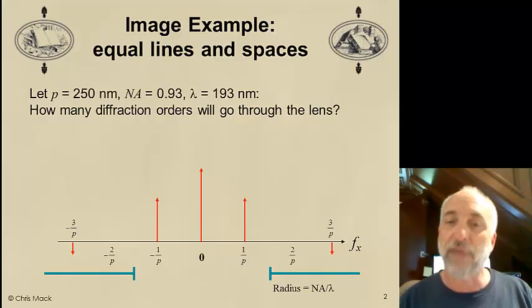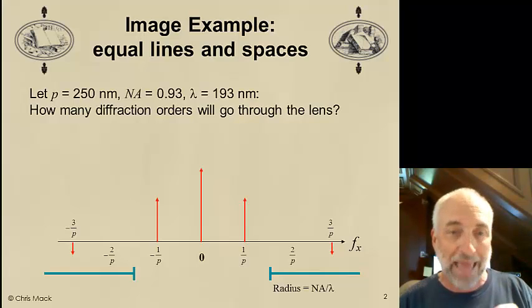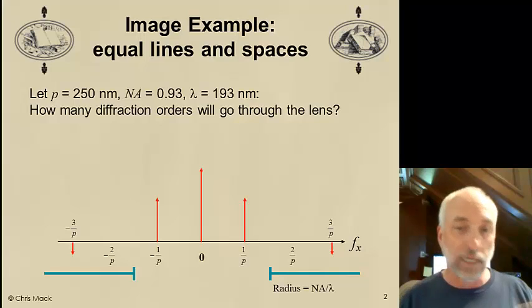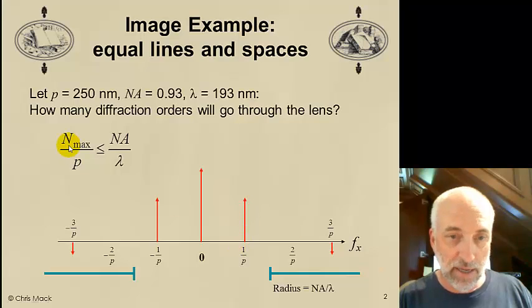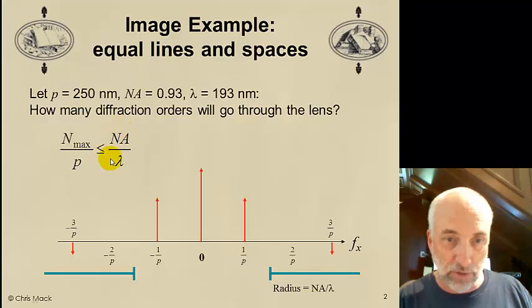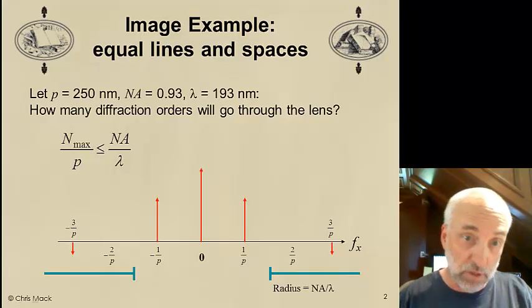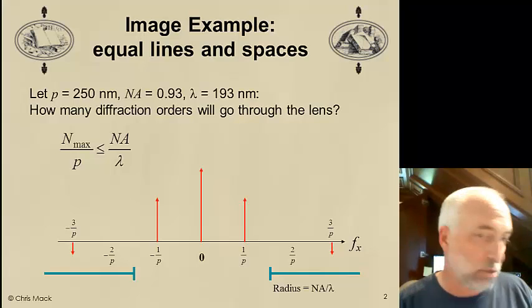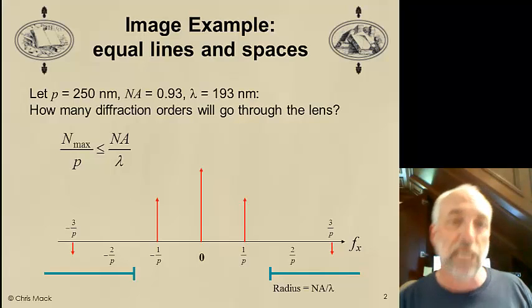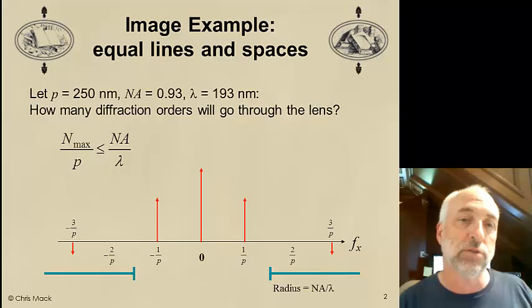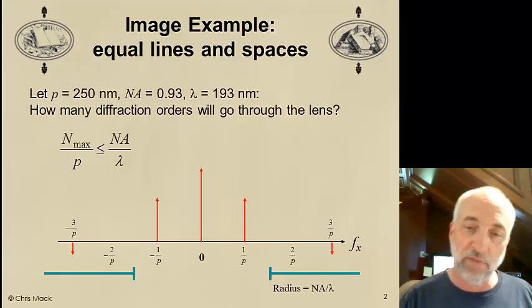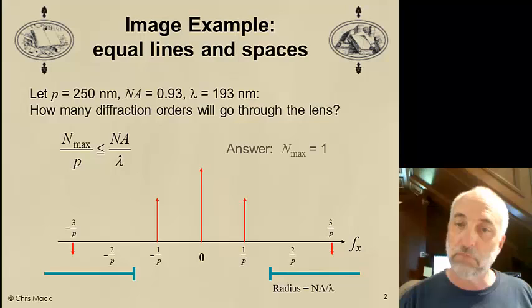Now, how many diffraction orders go through the lens? Remember, every diffraction order occurs at a position of N over the pitch, where N is an integer. So, the maximum value of N here divided by the pitch has to be less than or equal to the spatial frequency cutoff, which is NA over lambda. That's the radius of our lens. So, we simply plug in the value of the numerical aperture, the value of the wavelength, and the value of the pitch.